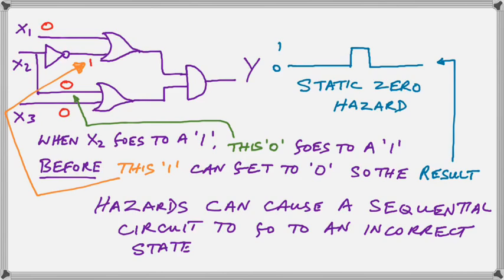Now why would it be called a static 0 hazard when it's clearly going from 0 to 1? Well, 0 is the static condition, so we have a static 0 and the hazard is where it jumps to 1. That's a spike or it could be called a glitch. And it's there in the output only because of the propagation delay in the inverter shown in this circuit.